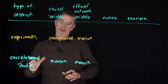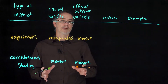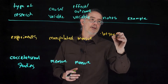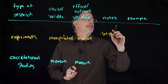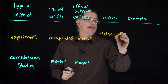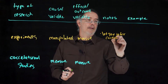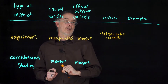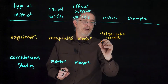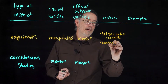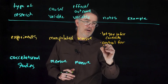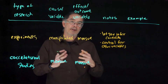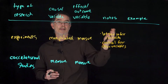Researchers do experiments or correlational studies for different reasons. Experiments are great because they let the researcher infer causality — they let you know if whatever you manipulated affected whatever the outcome variable was. By having participants show up in your lab and then you flip a coin: if they get heads, you give them caffeinated coffee; if tails, they get decaffeinated coffee.